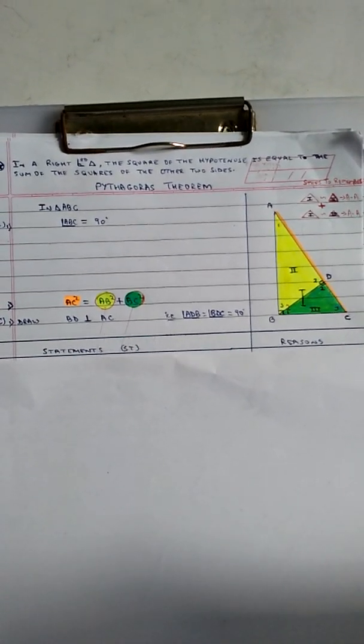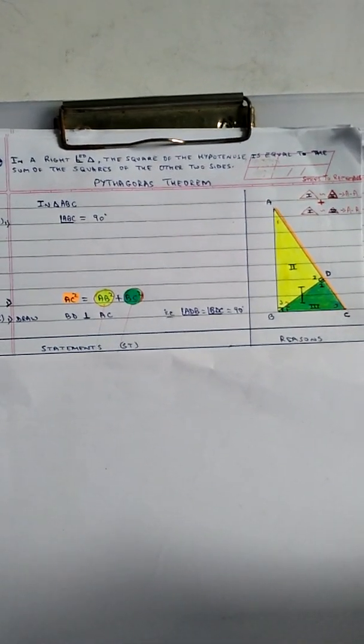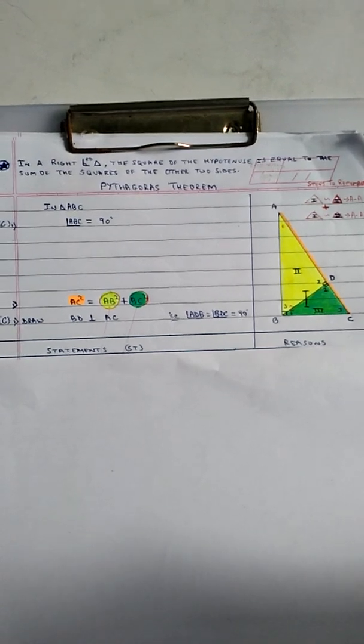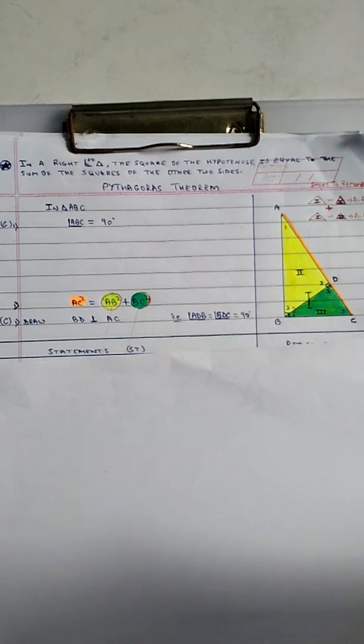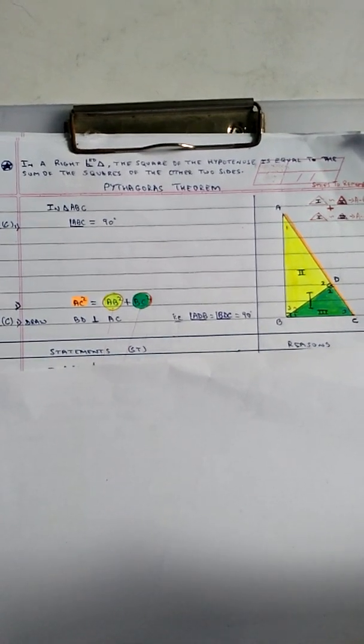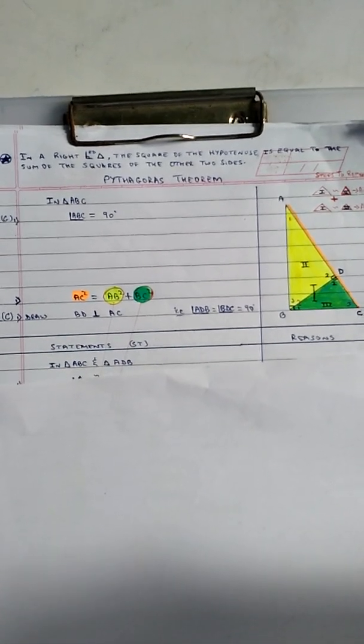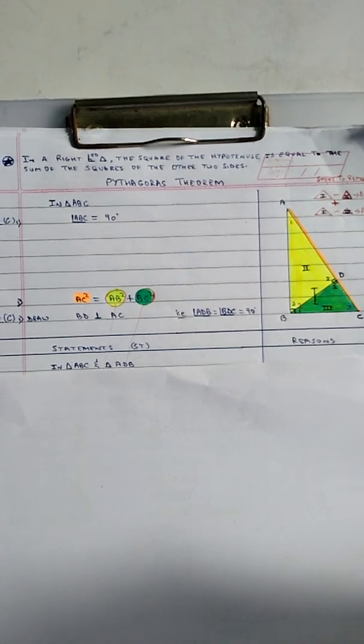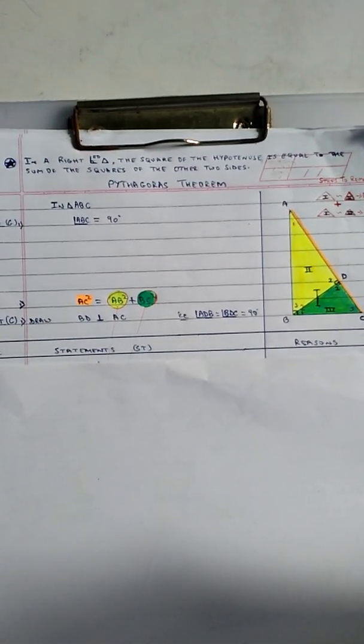Represent the angles with 1, 2, and 3. We now need to prove that hypotenuse squared equals side one squared plus side two squared, that is AC² = AB² + BC². Steps to remember: